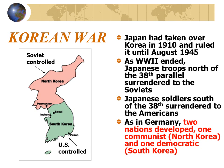Japan had taken over Korea in 1910 and ruled it until August of 1945. As World War II ended, Japanese troops north of the 38th parallel surrendered to the Soviets, while those south surrendered to the Americans. As in Germany, two nations developed: communist North Korea and one arguably democratic — South Korea — though the United States essentially installed a military dictatorship in South Korea that would remain from 1945 until 1988, with numerous military strongmen ruling the country while torturing and murdering its citizens.